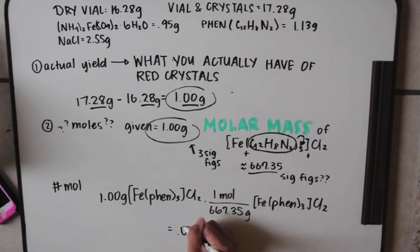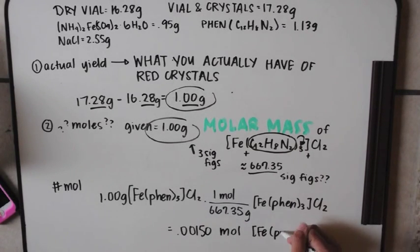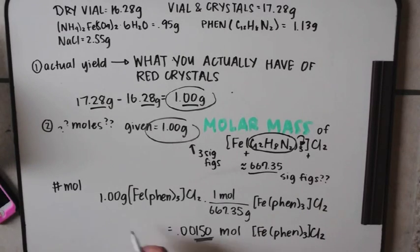Now, you would have 0.00150 moles of iron tris phen chloride salt.